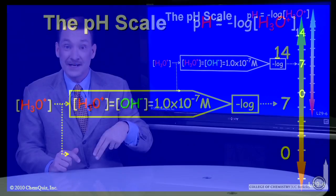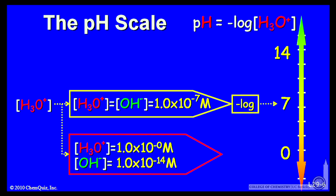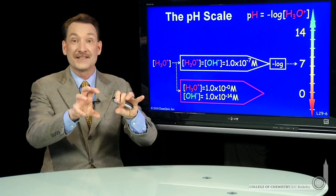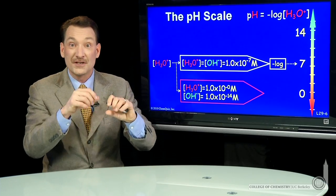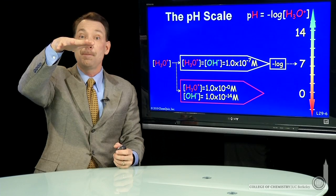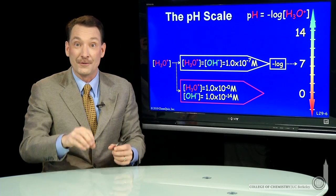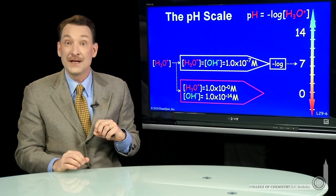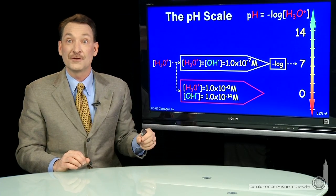If you have an acidic solution, then the H3O+ concentration is high. The OH- is low. Remember, H3O+ and OH-, their product must always be 10 to the minus 14. So if H3O+ goes up, OH- must go down. They're locked in synchrony with each other by the equilibrium of the autodissociation of water.